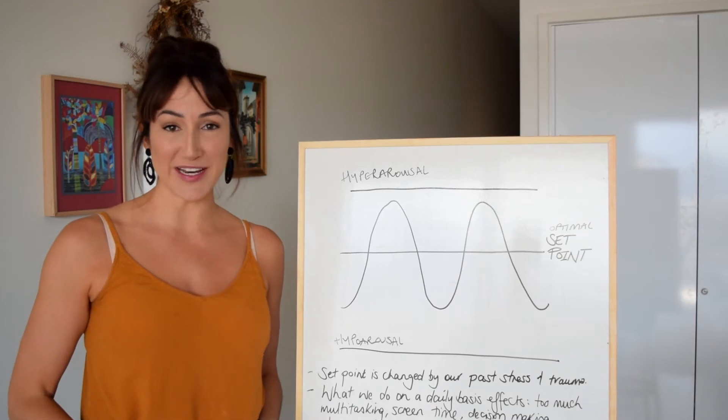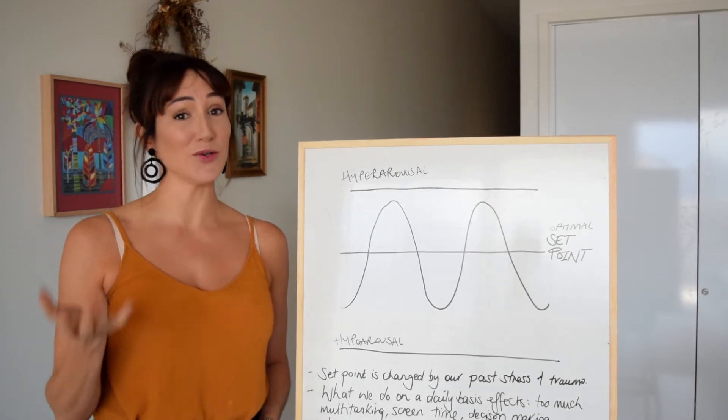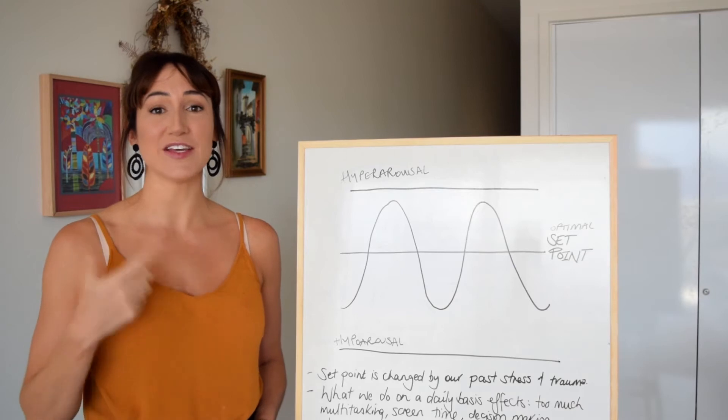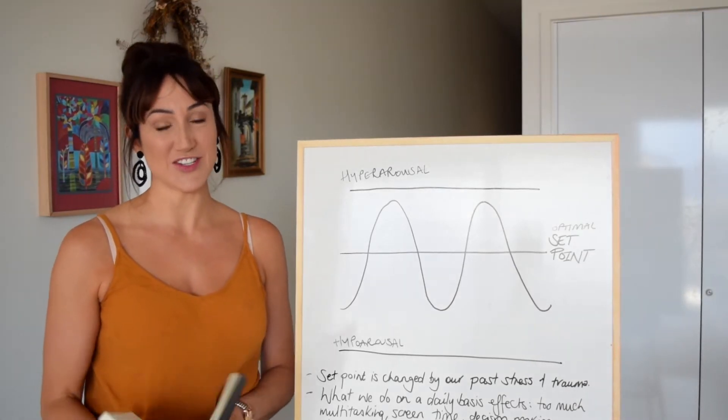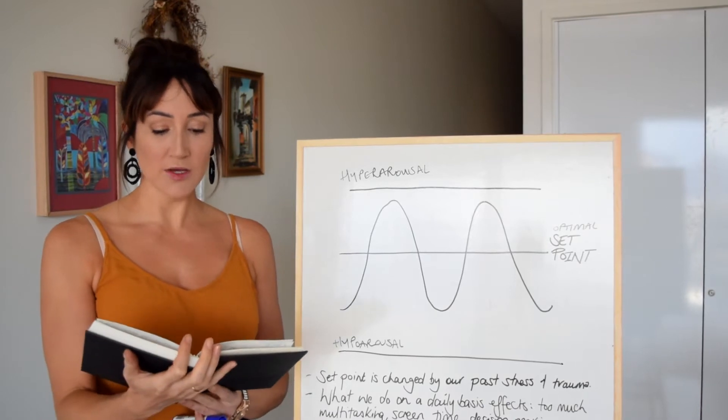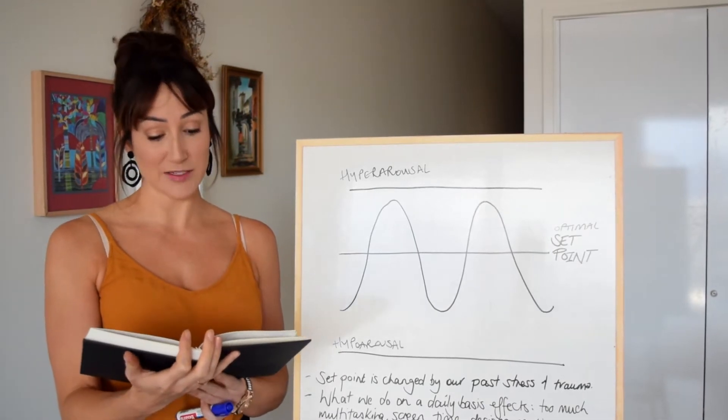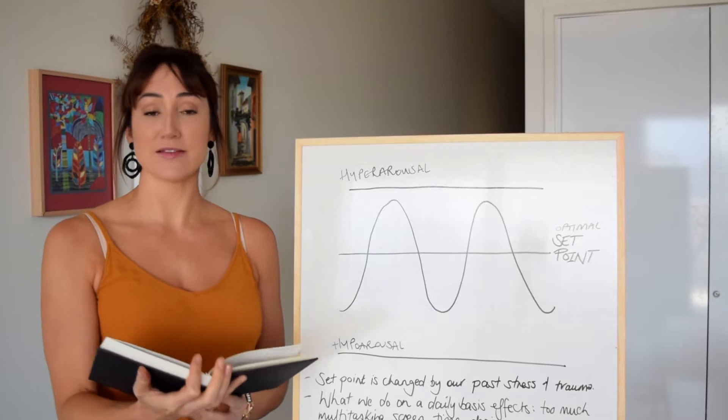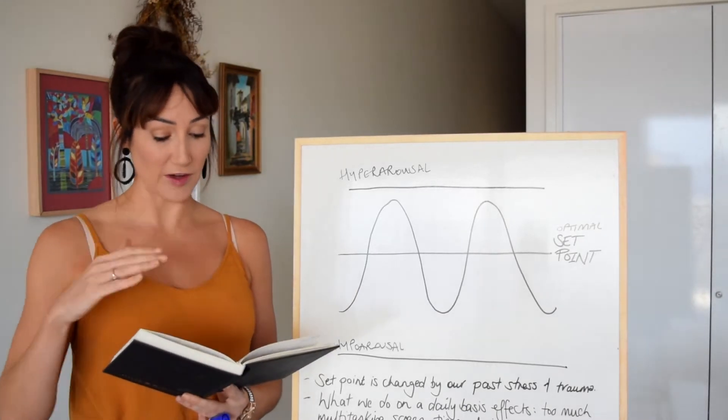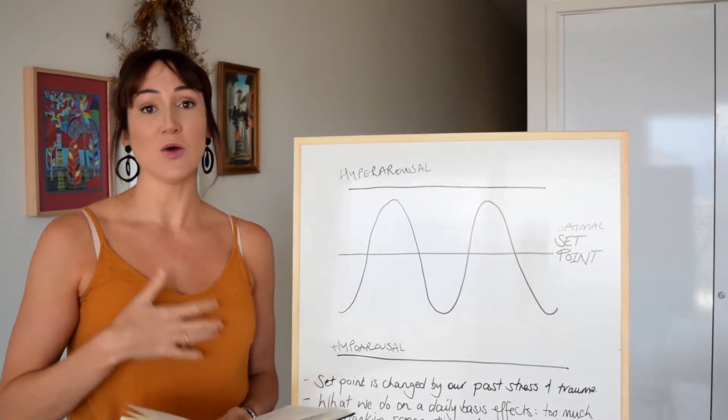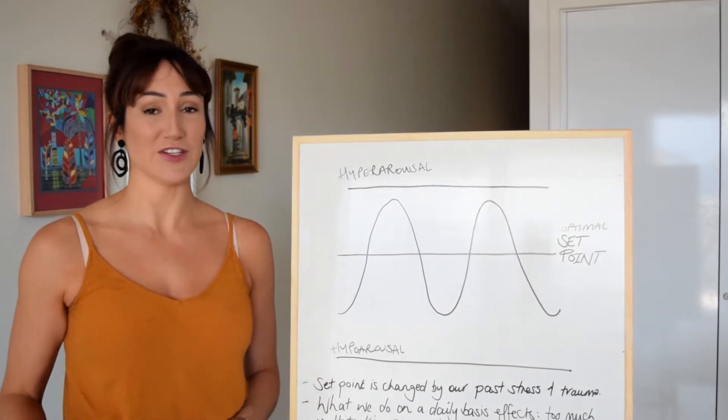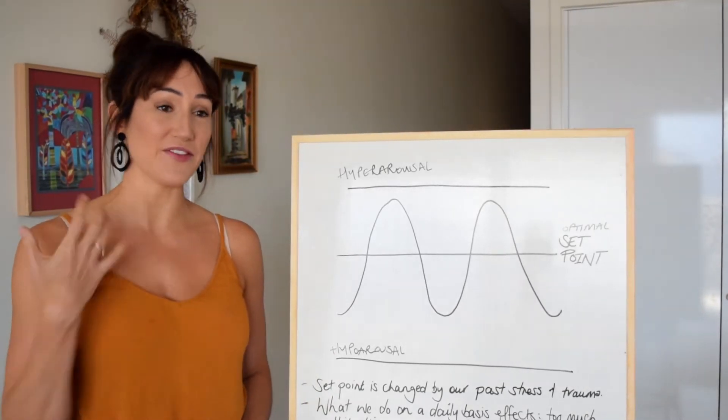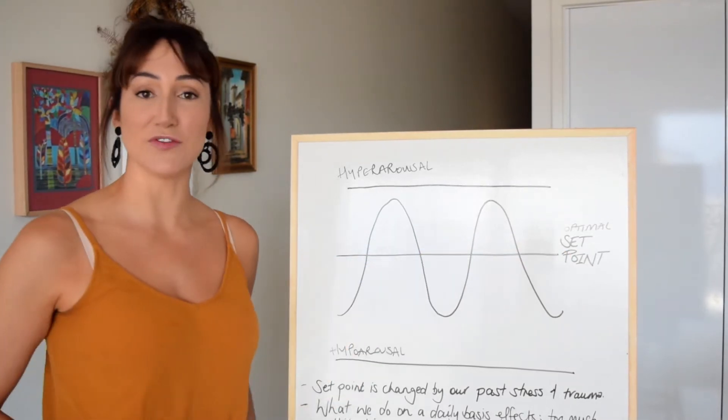Hi there and welcome to Q&A Tuesday where I answer all your questions on neuroscience, the nervous system, and the vagus nerve. This week's question says: why do I find it so hard to make positive changes and sometimes I move into fight or flight or into freeze when I try and create new habits? This is an excellent question that we can answer when we look at the set point of the nervous system.